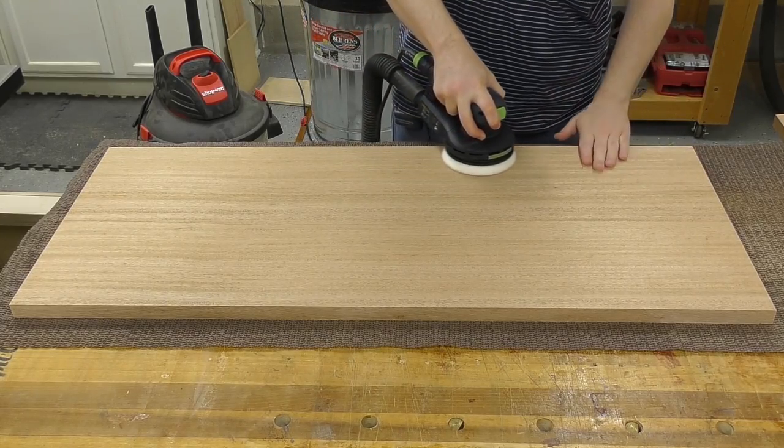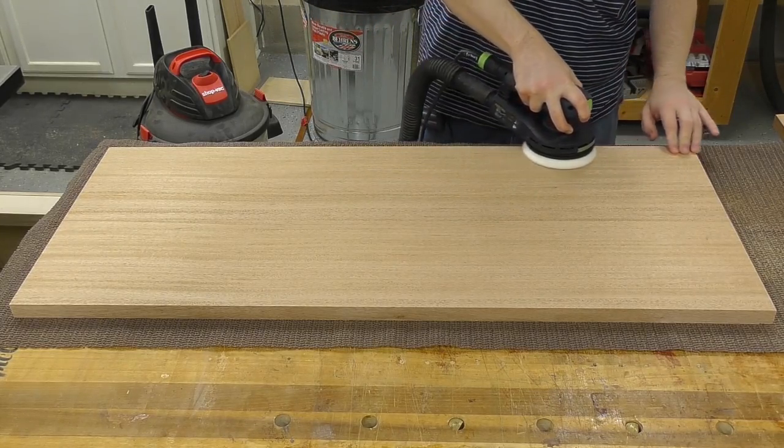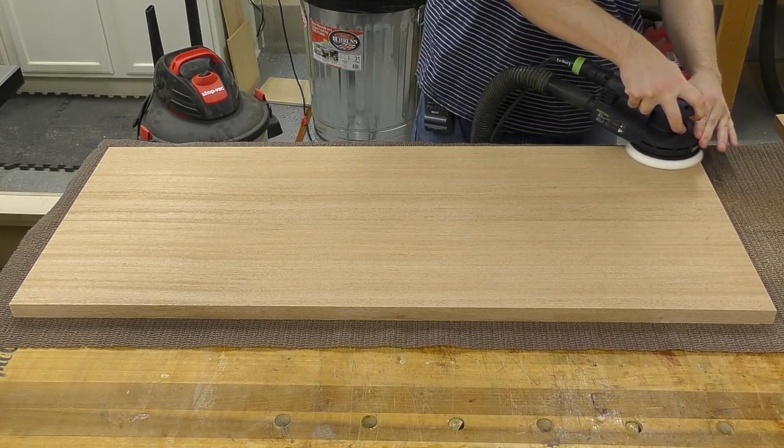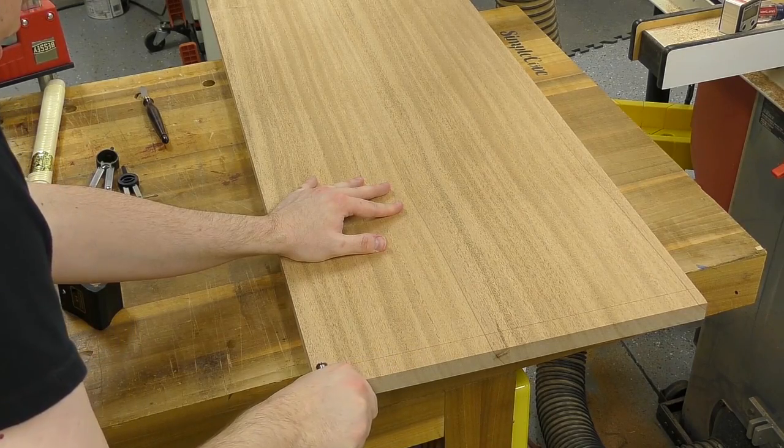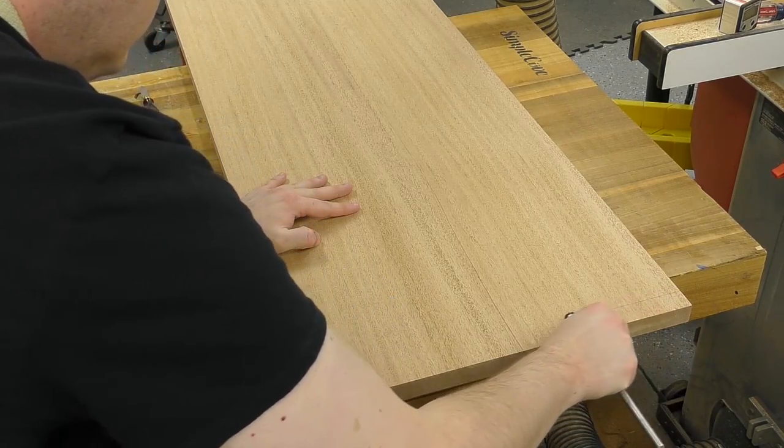Before cutting the dovetails, I like to go ahead and sand with the aggressive grits of 80 and 120 grit just using my random orbit sander. I like to cut the dovetails first, so I'm using my marking gauge and marking four sides of the tail boards.